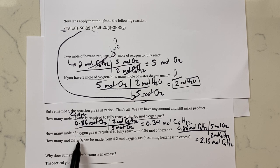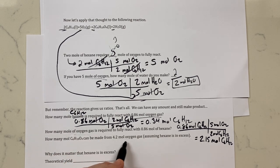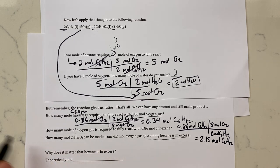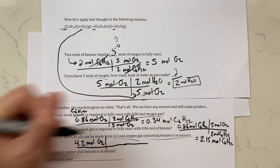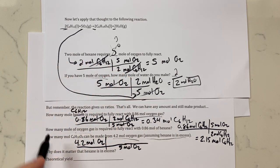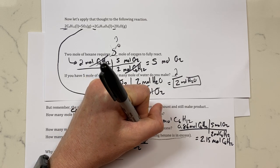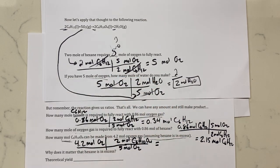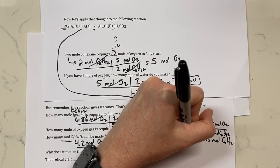The next question says how many moles of adipic acid can be made from 4.2 moles of oxygen gas, assuming hexane is in excess. So 4.2 moles of O2 is our given amount. If this is moles of O2, we put moles of O2 in the denominator with coefficient five, and for every five moles of O2 we get two moles of C6H10O4. 4.2 times two divided by five gives an answer of 1.68, or 1.7 moles of C6H10O4.